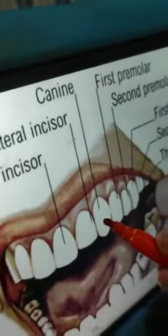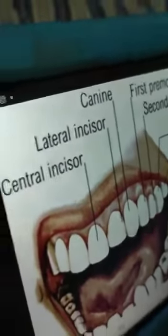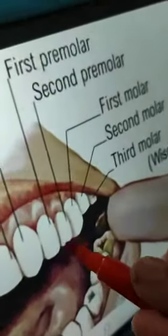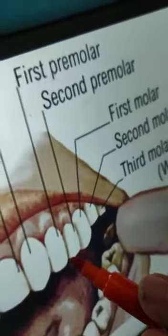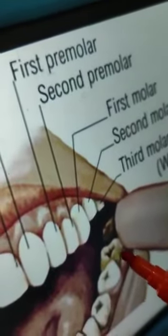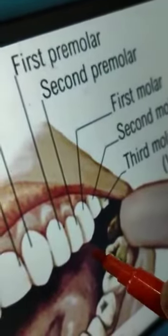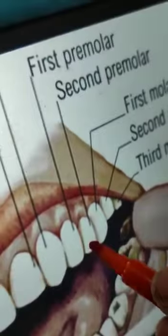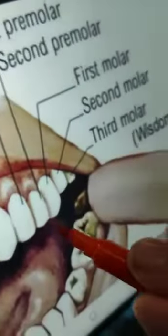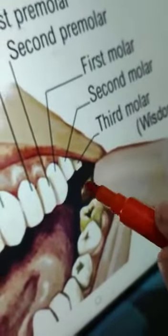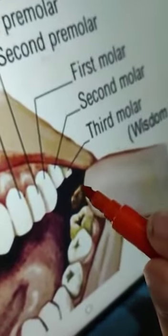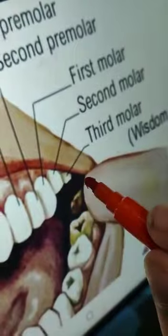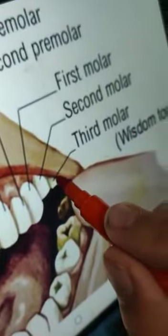And this is the canine. This is the first premolar. And this is the second premolar. And this is the first molar. This is the second molar. And this is the third molar.